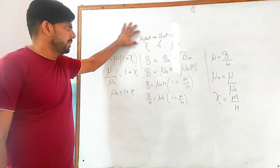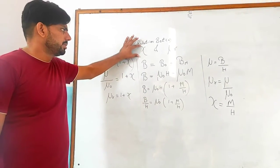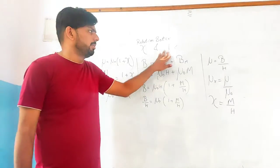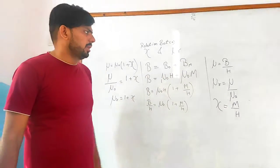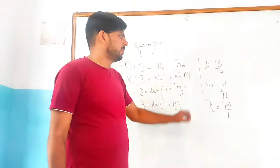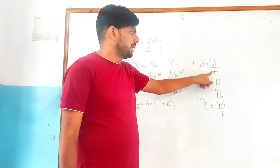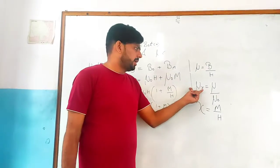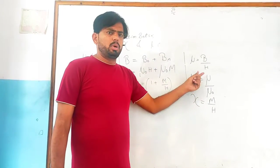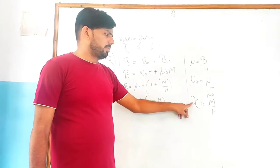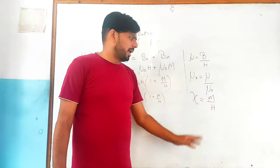We have to derive the relation between susceptibility, relative permeability, and magnetic field strength. In this case, three formulas you should know: First, magnetic permeability mu equals B upon H. Second, relative permeability mu upon mu not. Third, susceptibility M upon H.